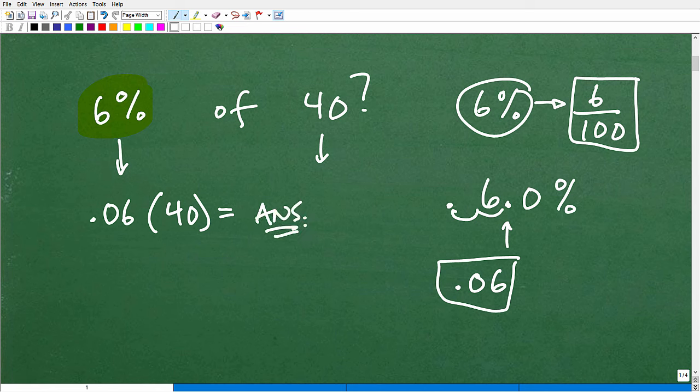So 6% as a decimal is 0.06. And then we just multiply that by 40, and we would get our answer. This is just an illustration of a basic direct percent problem.